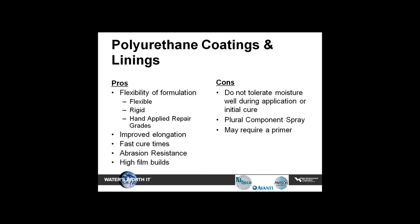Polyurethane coatings and linings: the pros are flexibility — very flexible with 50-60% elongation — along with rigidity in their film. They can be hand applied with certain technology, have very good elongation, fast cure times, and very good abrasion resistance — up to a quarter inch or high film build. The cons are they do not tolerate moisture at all during application, so they cannot go over surface saturated conditions. They must be sprayed through a plural-component pump and require a primer.